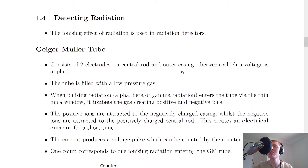Hey folks, how's it going? Mr. Mitchell here. In this video we're going to look at how to detect radiation. So let's get started. We're going to look at four different types of radiation detectors: the Geiger-Müller tube, film badge, spark counter and scintillation counter.